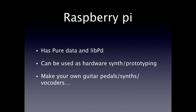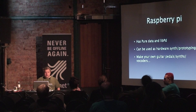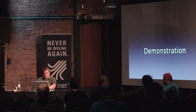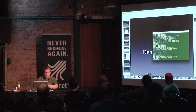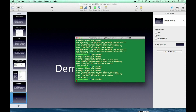How does Raspberry Pi come in? It has both Pure Data and LibPD. It can be used as a hardware synth or for prototyping your own effects without buying DSP cards or setups. You can make guitar pedals, synths, vocoders - it's really simple to use.